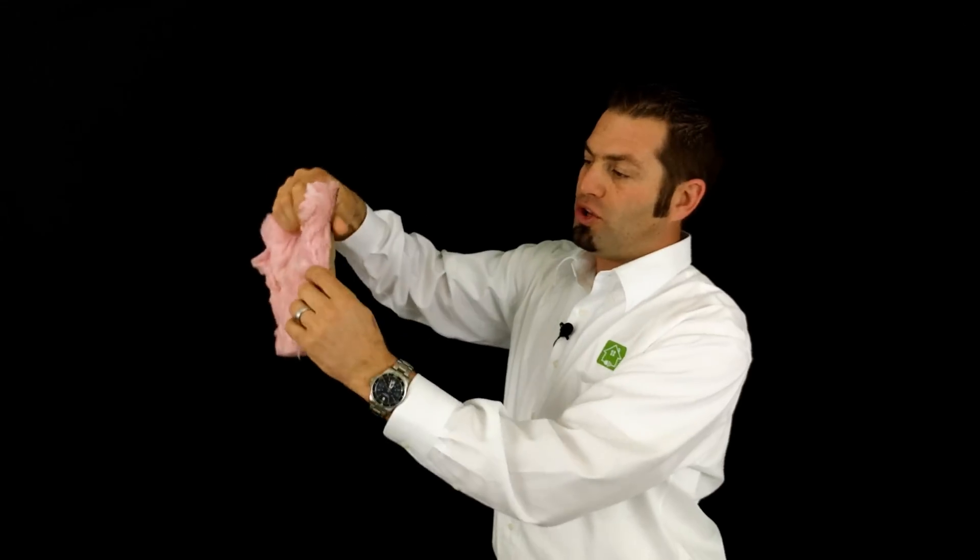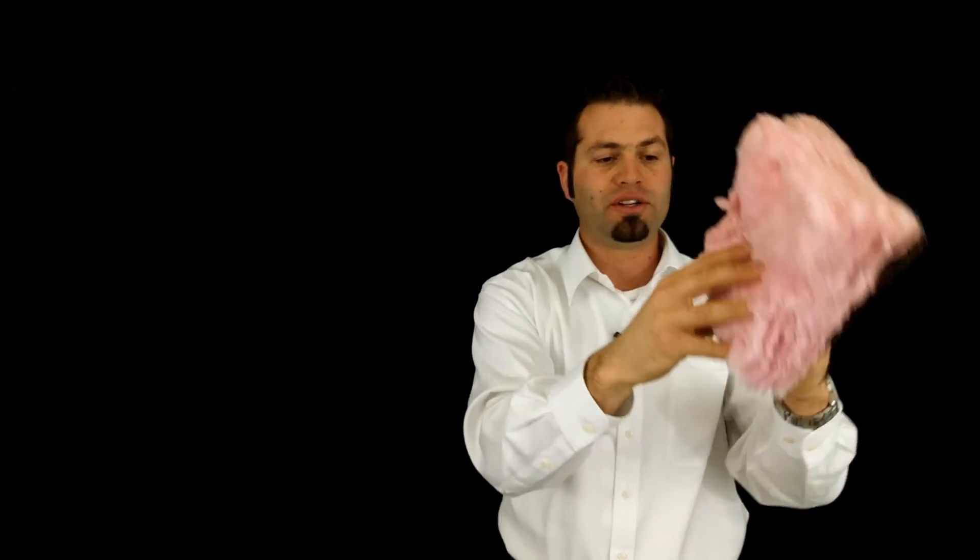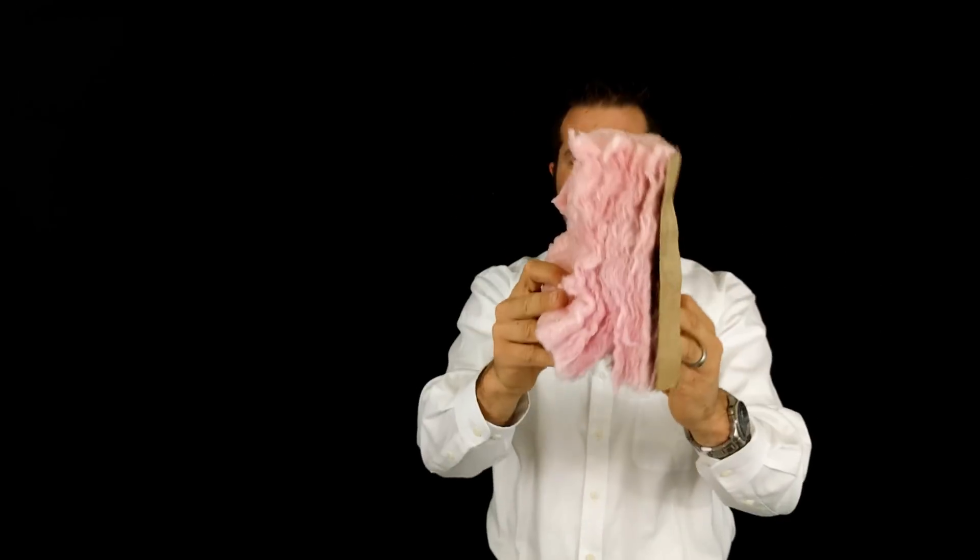There are a couple different ways to look at R-value. The manufacturer says you've got an R13 right there. When that product is installed in a manner where it's compressed and really tight, or you've got an electrical outlet and it's crammed around there and not cut around the outlet, or there are wires and it's bulging away from the drywall because the wires are holding it out and nobody split the insulation and slid it over the wires—it might say it's R13, but in reality it's actually like an R7 or R4 depending on how it was installed.